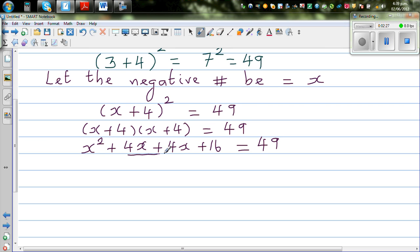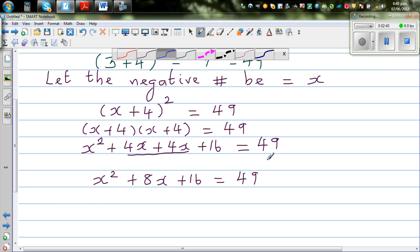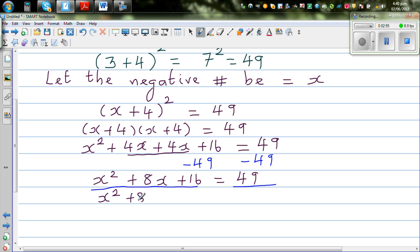So to simplify this, this is x squared plus 8x plus 16 is equal to 49. So I want to make it a quadratic equation. So I am going to take away 49 from this side. So you have to take away 49 from this side. So you have got two sides now. This is one side and this is the other side. So this becomes x squared plus 8x. This is negative 49 plus 16, which is negative 33, is equal to 0.